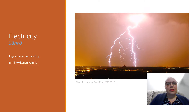In many cultures, lightning has been viewed as a part of a deity. In old Finnish folk religion, the god of thunder was named Ukko. Ukko had a magical hammer called Ukkonvasarapa, in which he struck lightning.